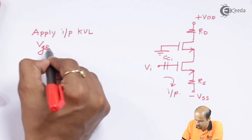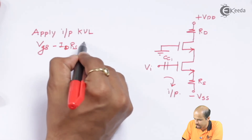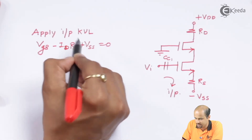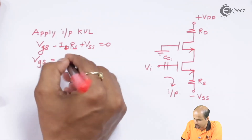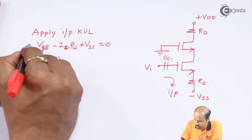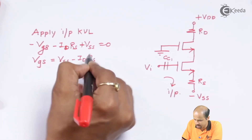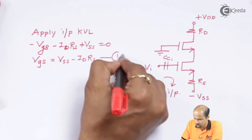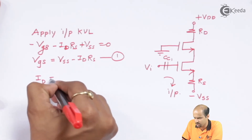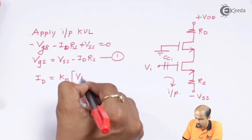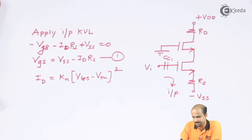Applying input KVL gives us: VGS minus ID·RS plus VSS equals zero. Therefore, VGS equals VSS minus ID·RS. This is equation number one. Substituting this into the standard enhancement MOSFET formula, ID equals KN·(VGS minus VTN) squared, we obtain a quadratic equation in ID.